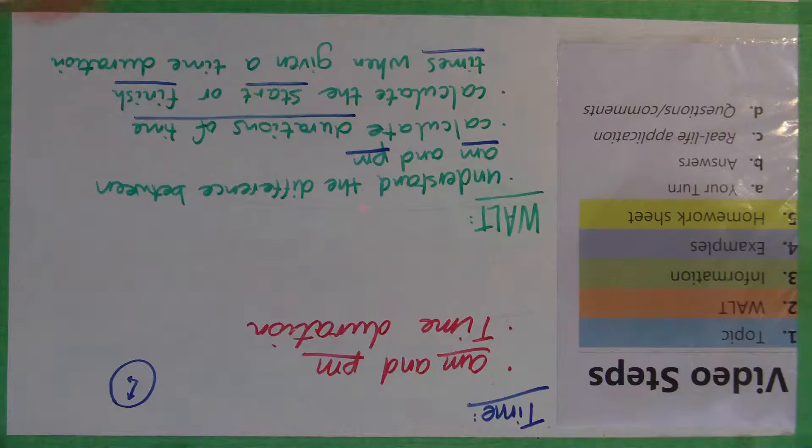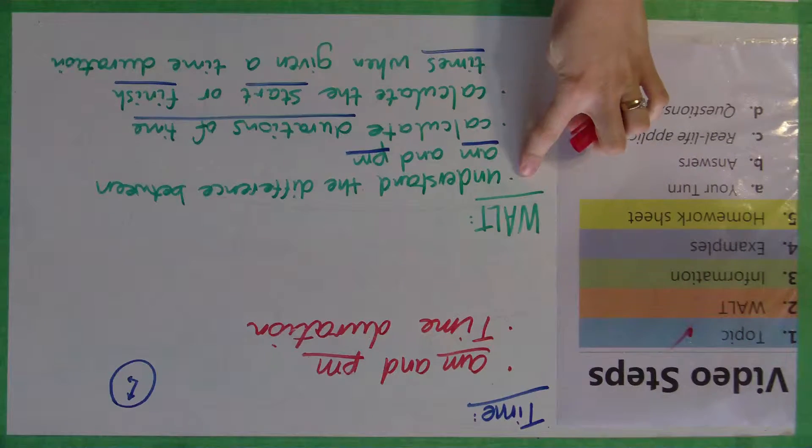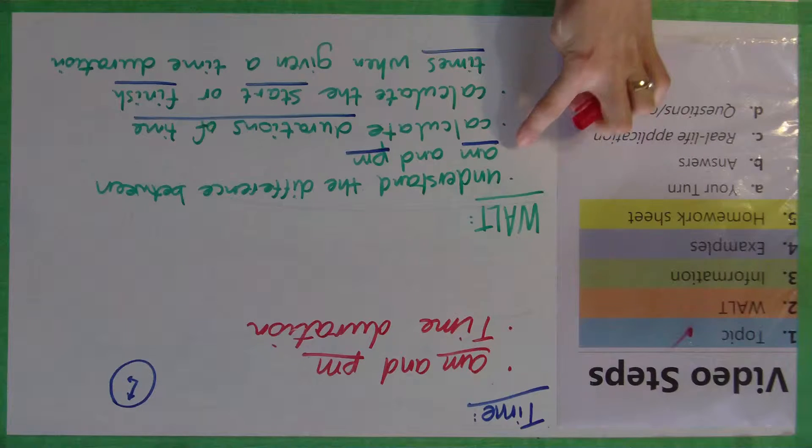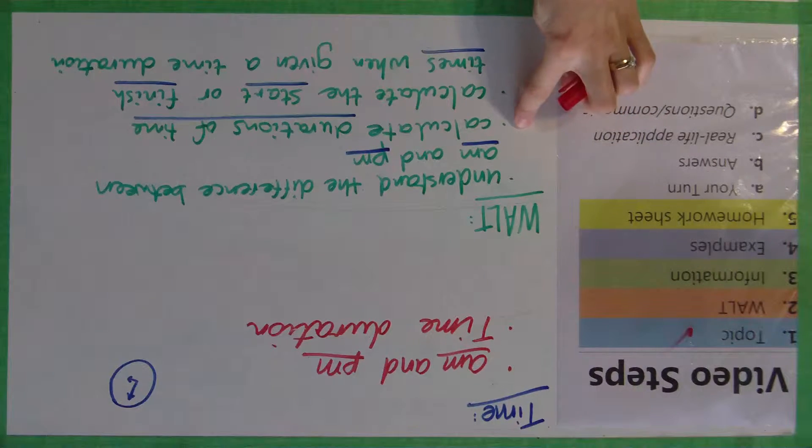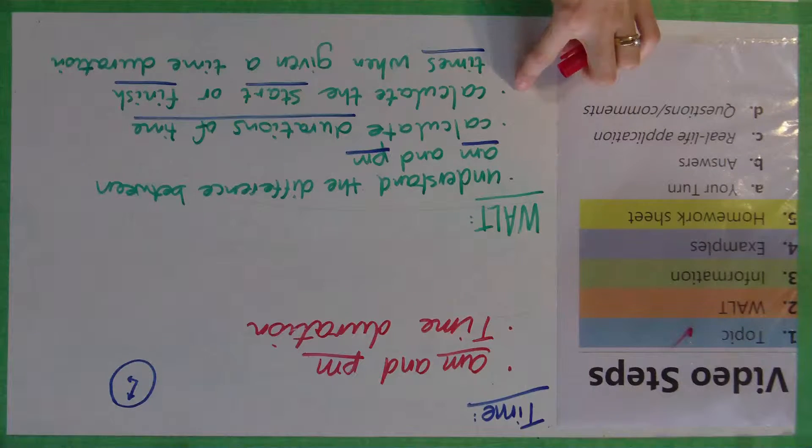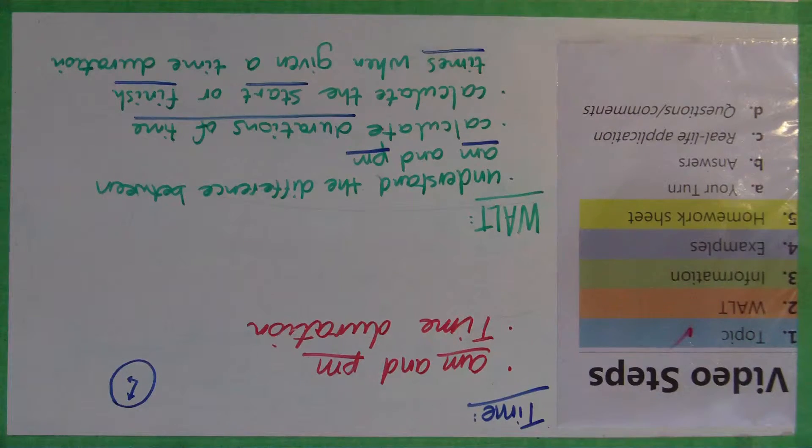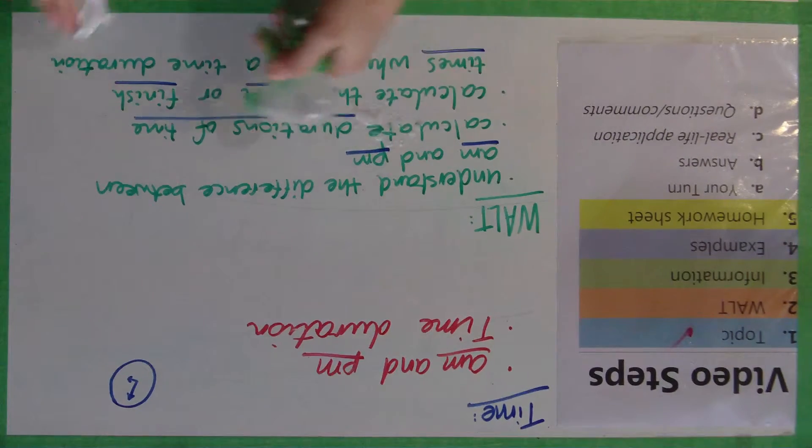So looking at our objectives, we are learning to understand the difference between a.m. and p.m., calculate durations of time, how much time has passed, and calculate the start or finish times when given a time duration. So let's look at some examples, or some information first.